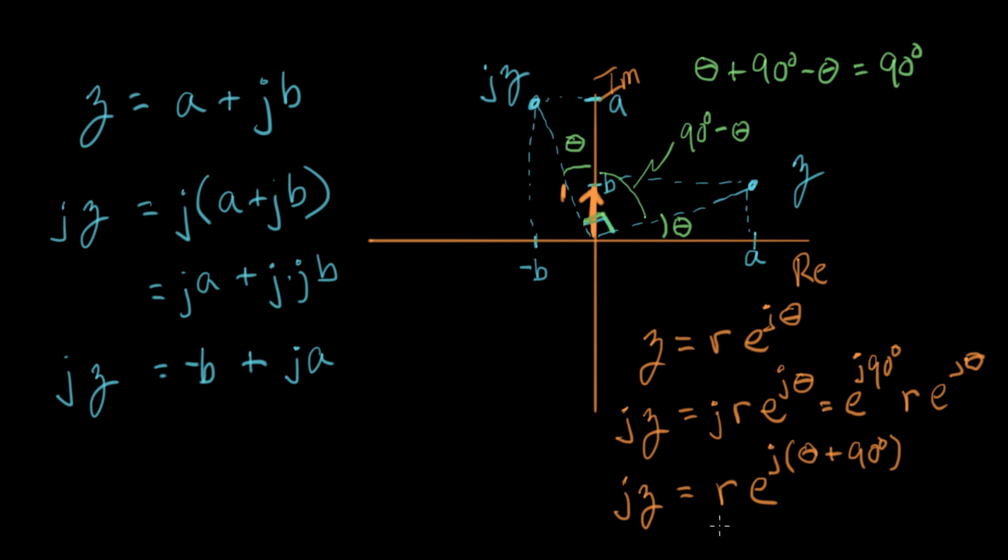So in exponential notation, we get this vector here. We go an additional 90-degree rotation, and we go out the same distance we had originally, r. So now we've shown that we can rotate any complex number by 90 degrees if we multiply it by j.